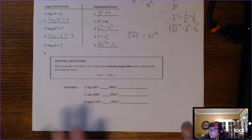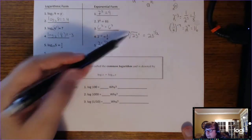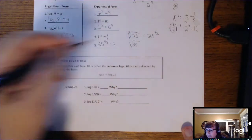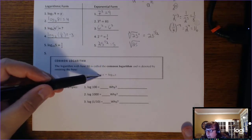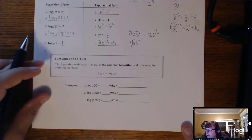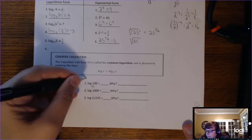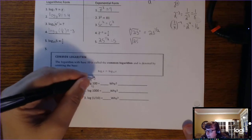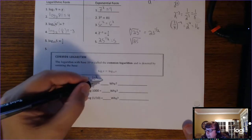There is something called the common log, which is a log with a base of 10. Just like we don't write the 2 in a square root symbol because it's so common, if you see a log without a base, you can assume it's base 10 — it's called the common log. For example, the log of 100 has base 10, and 100 is 10 squared. So the log of 100 is just the exponent, 2.